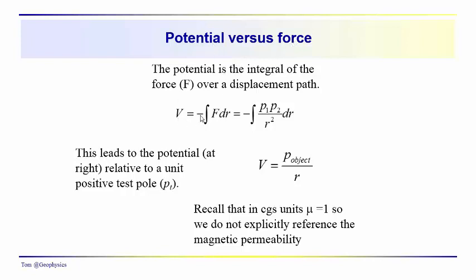The potential is equal to the negative of the integral of the force over some displacement path — so this would be the negative of the work. If we plug in the formula for the force between two magnetic poles, it takes on this form, so that the potential, when we do this integration relative to a unit test pole, is equal to the pole strength of the object we're interested in divided by the distance between the test pole and that pole.